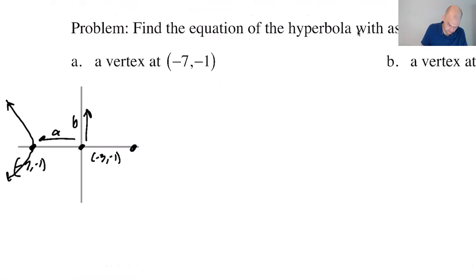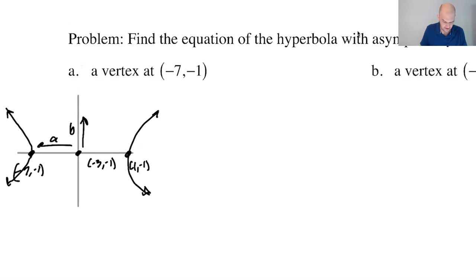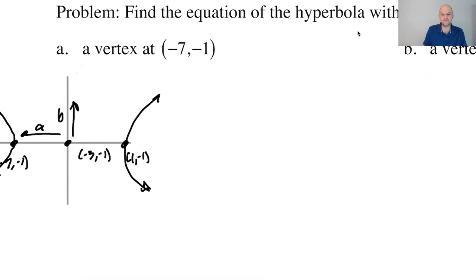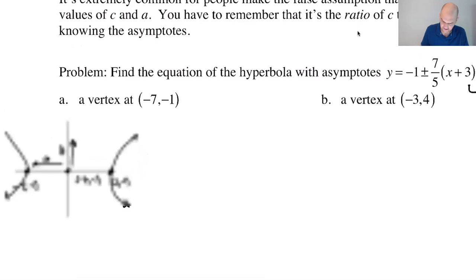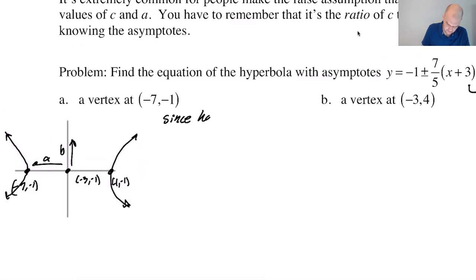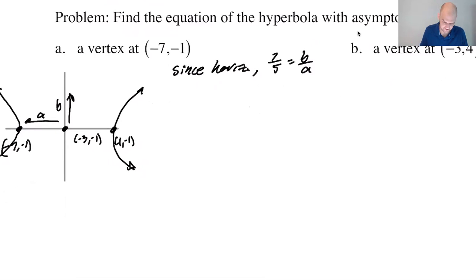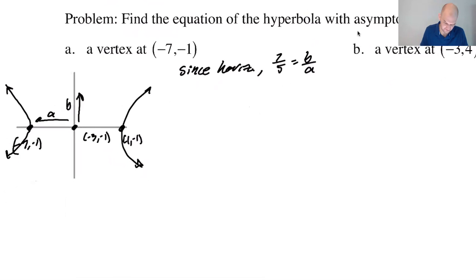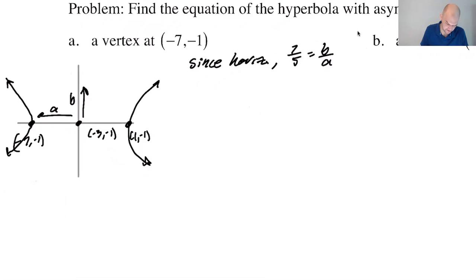So a is four. So what do we know? We know that since horizontal 7/5 is b/a, if it was vertical, it would be a/b. So we know that 7/5 is b/a, we also know from our picture that a is equal to 4.